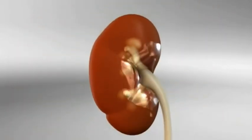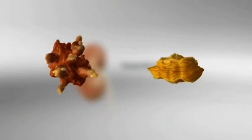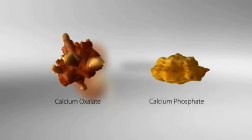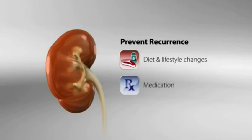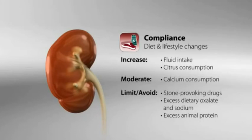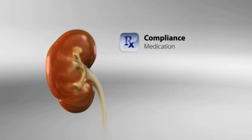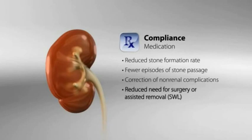There is no cure for kidney stones, but once an acute episode has been resolved, the key to therapy is simple: preventing recurrence. Unfortunately, the most common stones — calcium oxalate and calcium phosphate — can be effectively managed with a combination of diet and lifestyle changes and medication. Compliance with proven management guidelines, such as increasing fluid intake and avoiding stone-promoting foods, can significantly reduce stone recurrence. Medical therapies such as thiazide diuretics and potassium citrate are also highly effective in appropriate patients and can reduce the need for expensive assisted stone removal procedures such as shockwave lithotripsy (SWL).